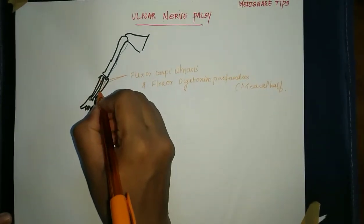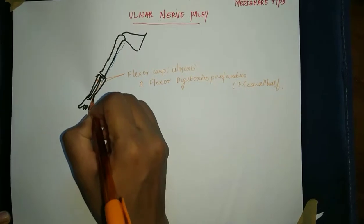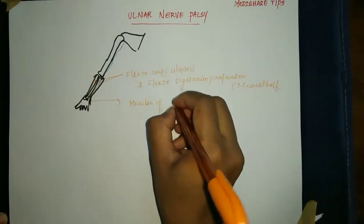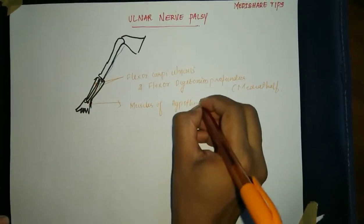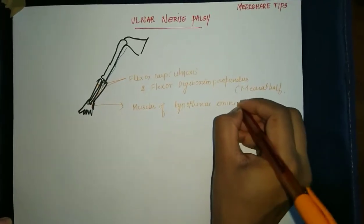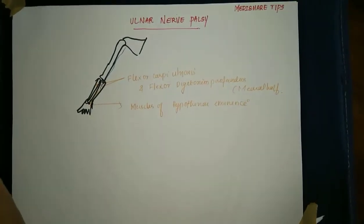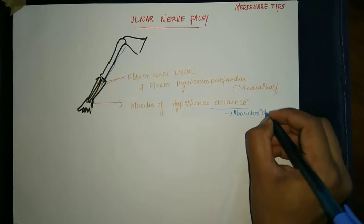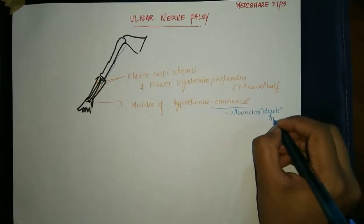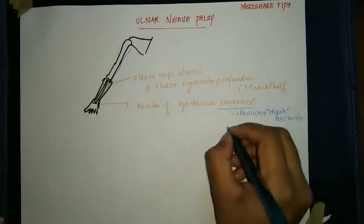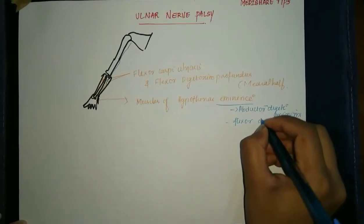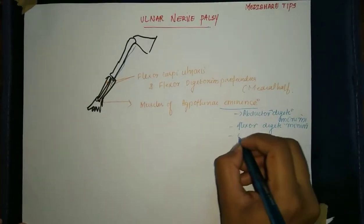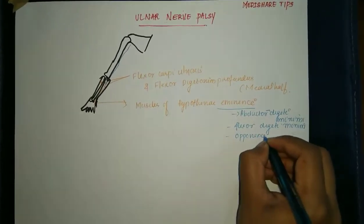It then passes into the hand and supplies the muscles of the hypothenar eminence. Those muscles are abductor digiti minimi, flexor digiti minimi, and opponens digiti minimi.